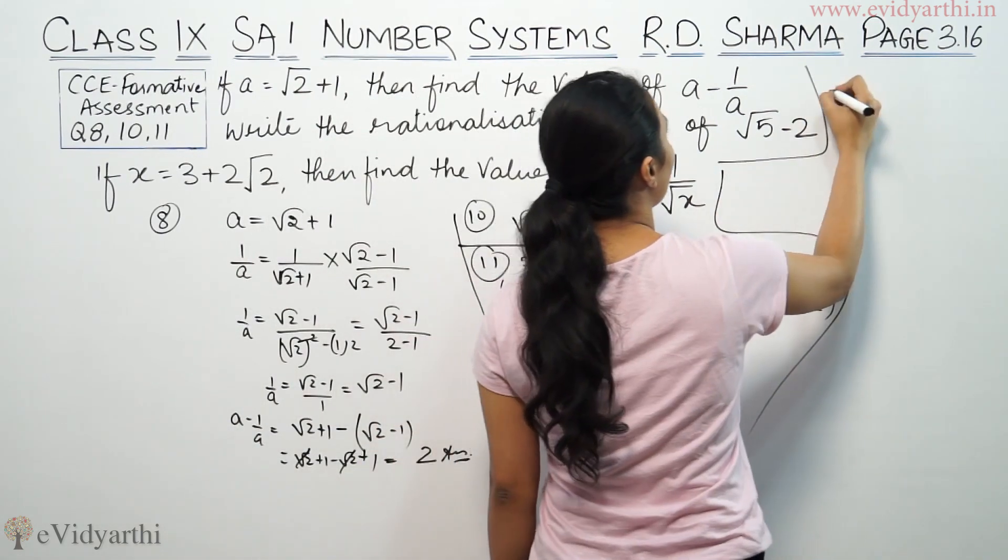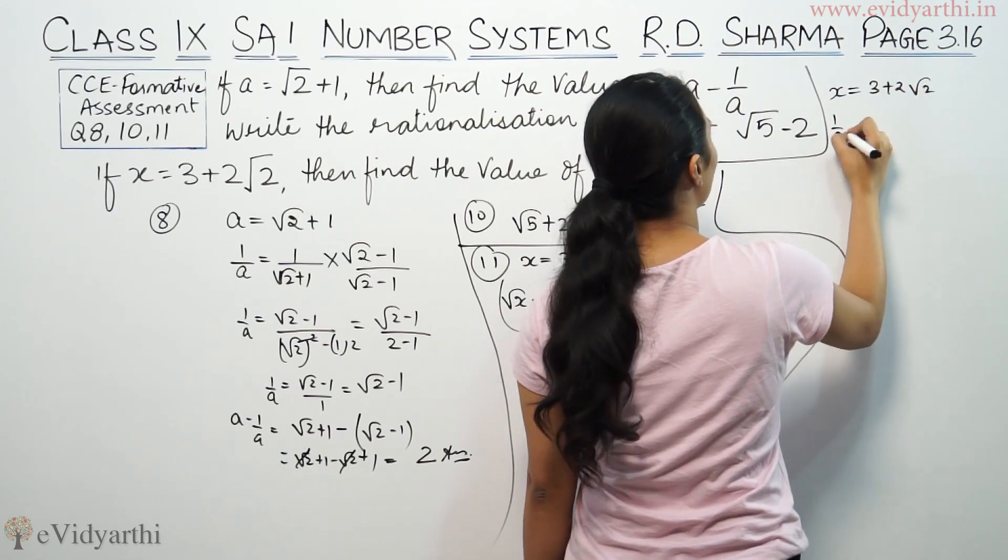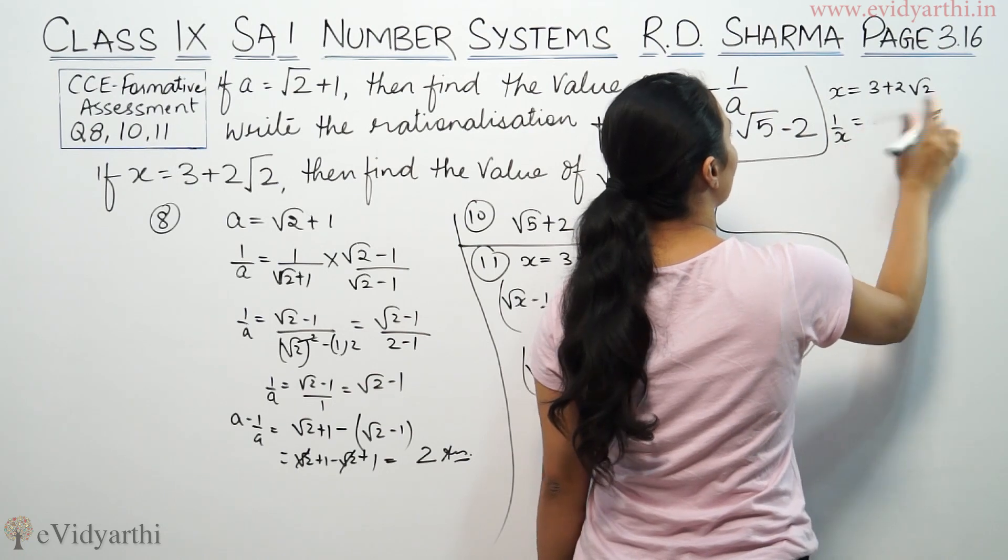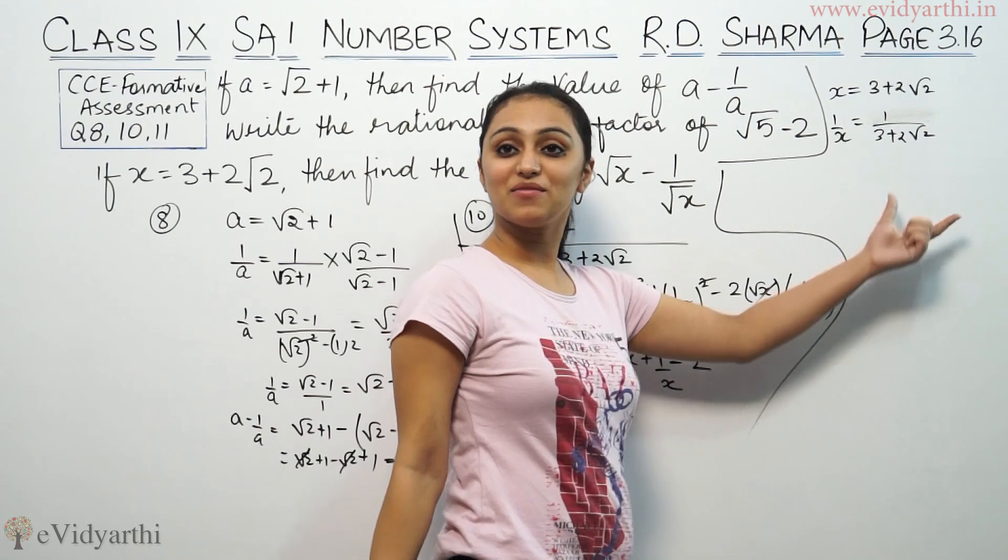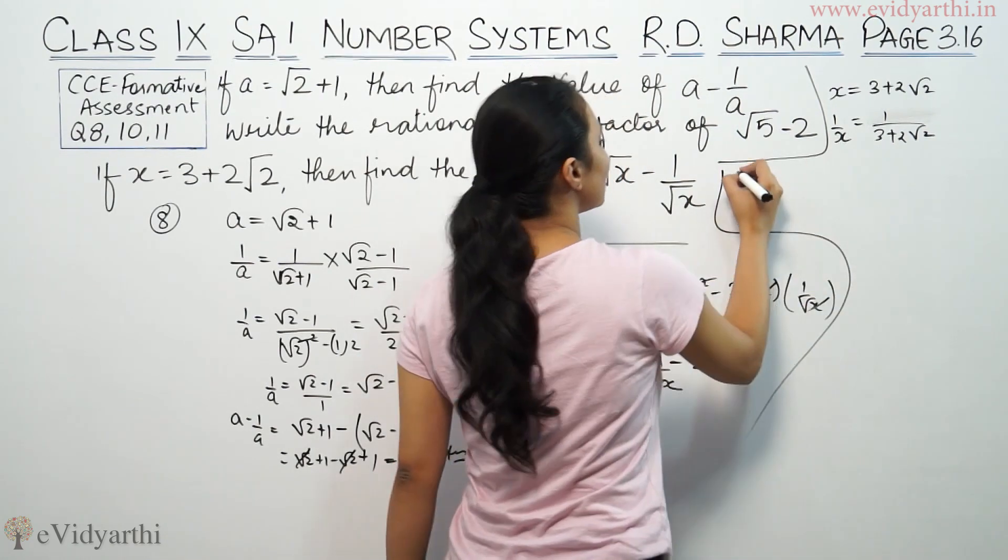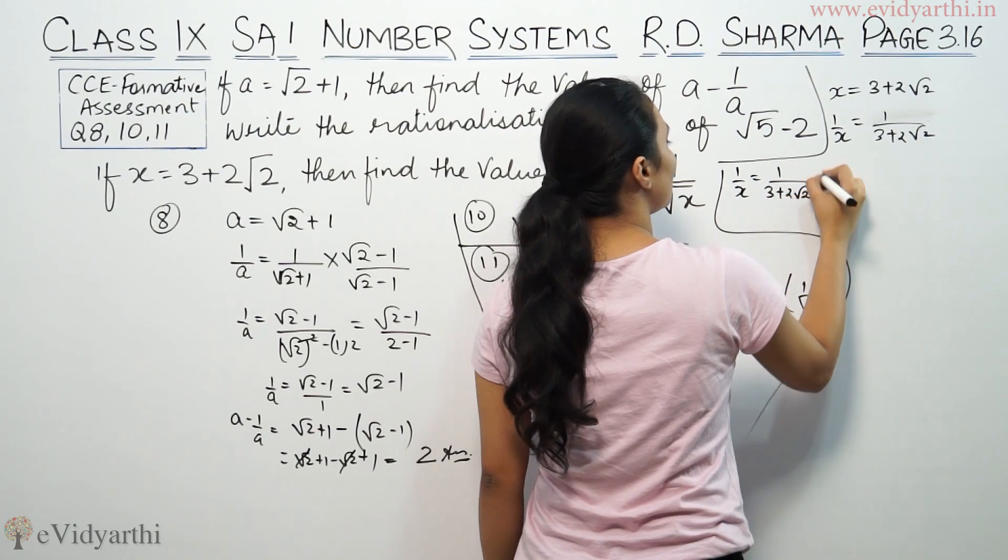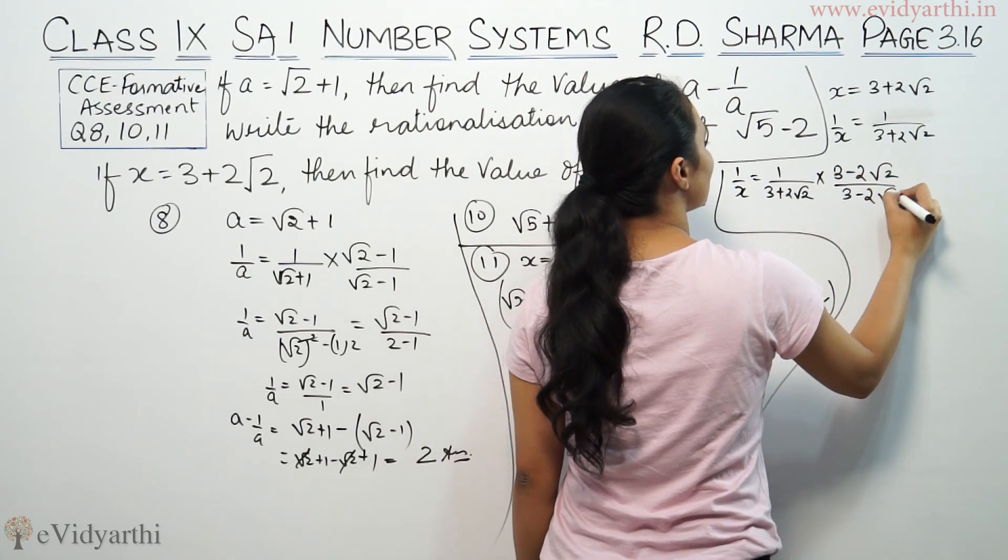We have x is 3 plus 2 root 2, so 1 by x will be 1 upon 3 plus 2 root 2. Since the denominator has a root, we will rationalize it. So 1 by x is 1 upon 3 plus 2 root 2 times 3 minus 2 root 2 by 3 minus 2 root 2.